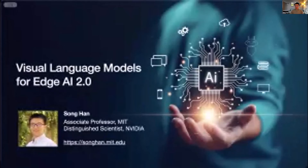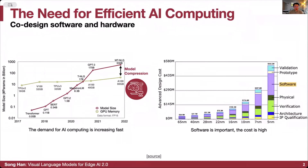There is a lot of need for efficient AI computing. This shows the supply of computing in green versus the demand in red. The demand for AI computing is increasing much faster. Software is very important, and the cost is very high for advanced technology nodes from 65 nanometer all the way to 5 nanometer. The software cost is getting very high and increasingly more important.